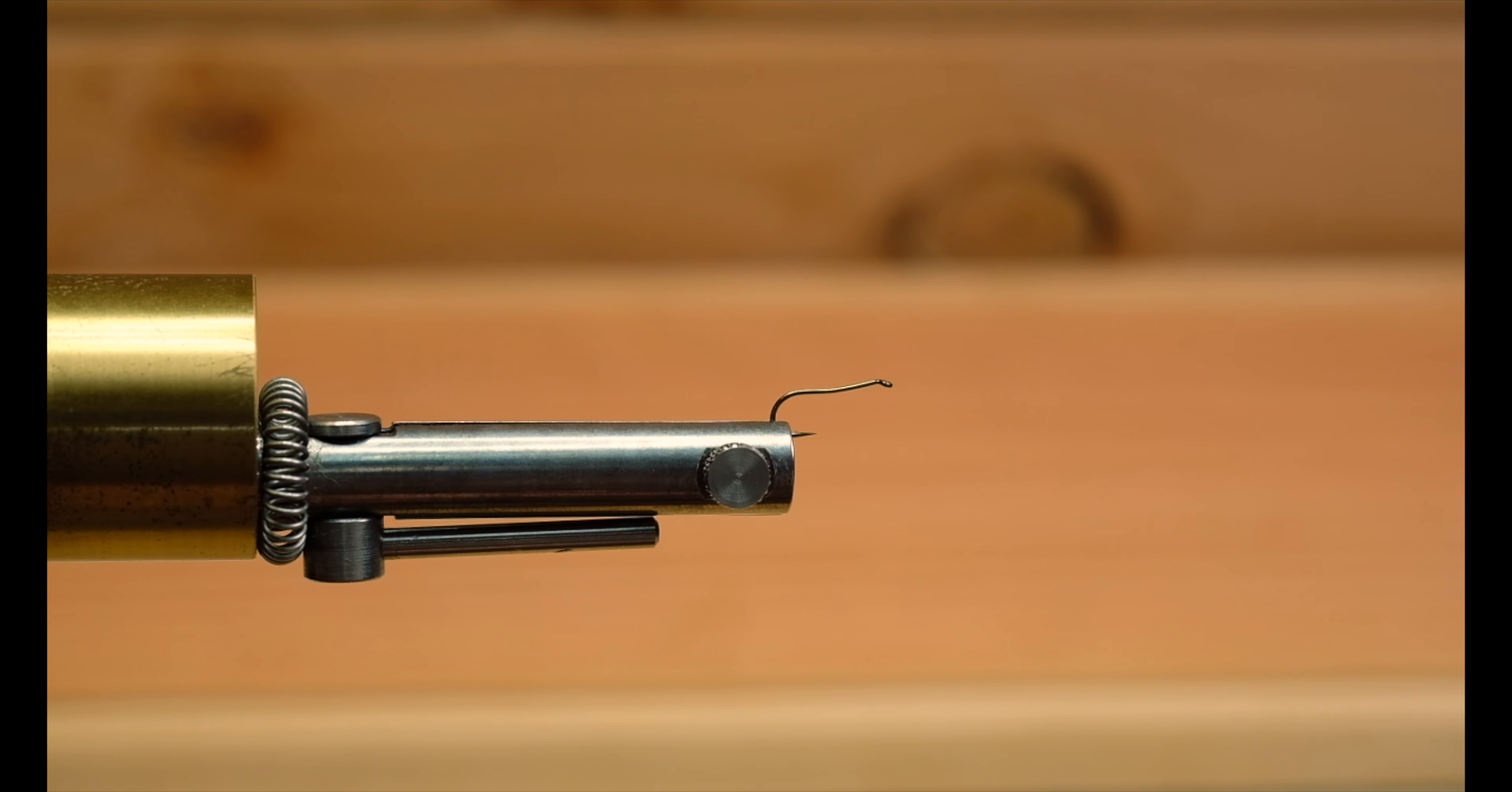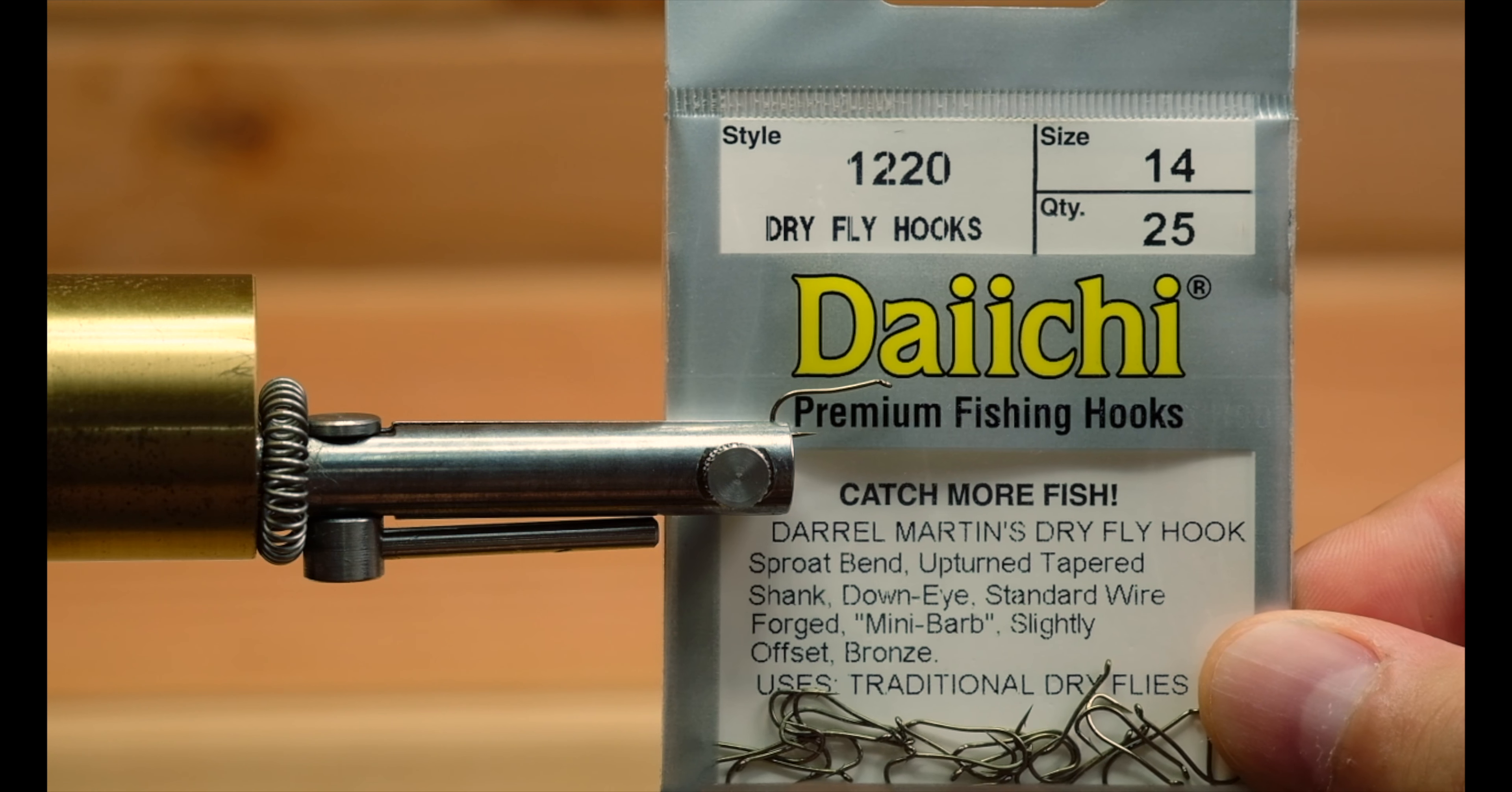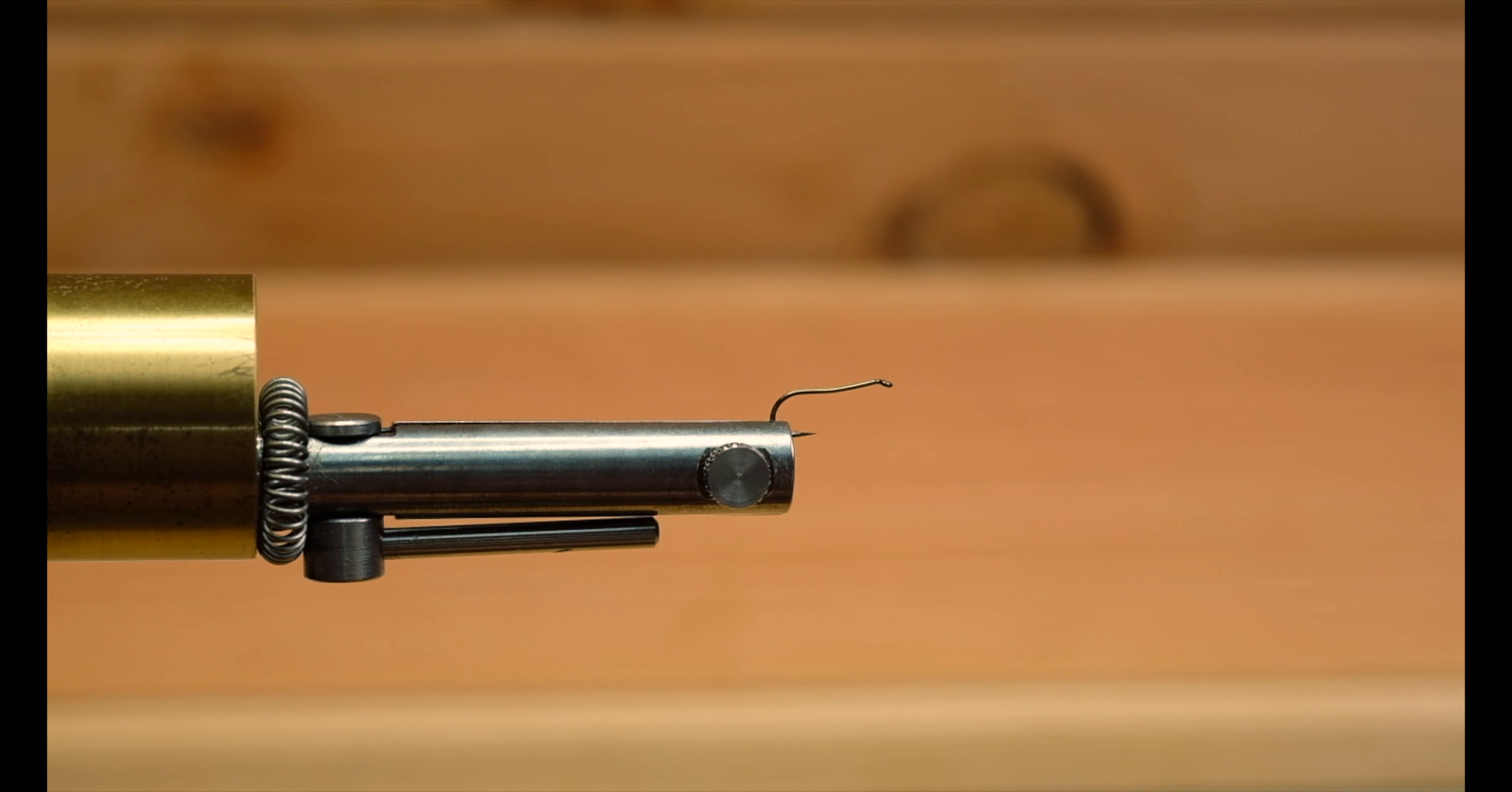Hi, thanks for watching. Today I want to tie my favorite caddis dry fly for you guys. I've got a special hook in the vise - the Daiichi 1220 in size 14. That's a Daryl Martens dry fly hook. What's so special about it is that the first part from the bend on is straight, and then it goes up at an angle. This makes the fly ride a little bit different on the water.